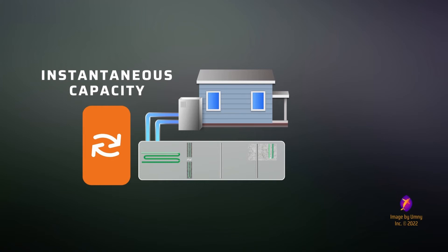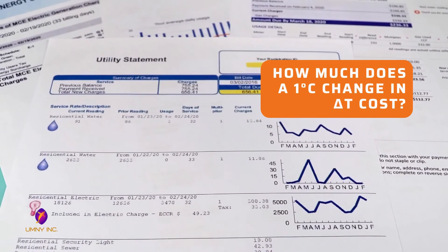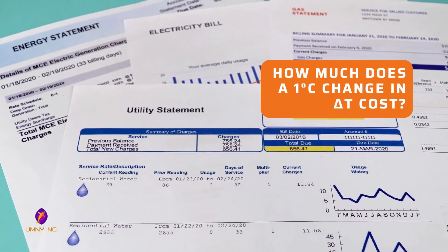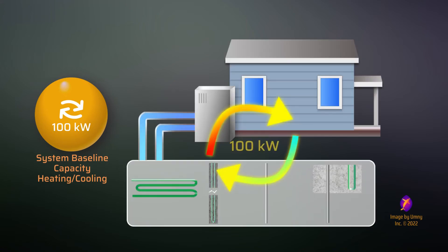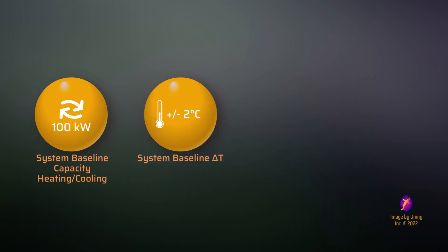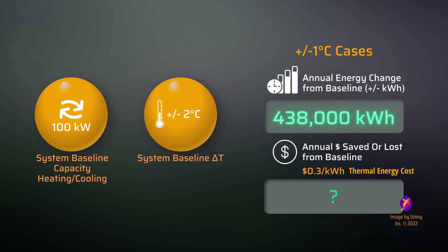Until this point, we've been focusing on instantaneous performance changes. But how do these effects add up over the course of a year of operation, and what is the resulting cost or savings from a plus or minus 1 degree change in delta T? If we have a geothermal system sized for 100 kilowatts of capacity — approximately 28 tons — it can produce 100 kilowatts of peak heating and cooling energy. While operating with a small baseline delta T, a change of just 1 degree results in 438,000 kilowatt hours, or nearly 1.5 billion BTUs, across the year. If our energy cost is 30 cents per kilowatt hour, this means we could be saving or losing a total of $131,400 across the year.